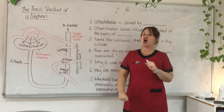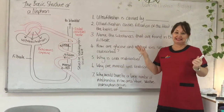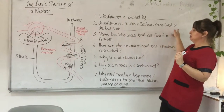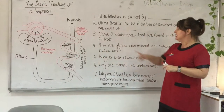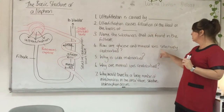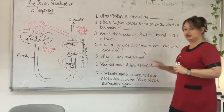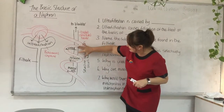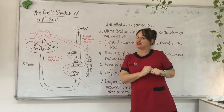Let's check our understanding with some questions. What causes ultrafiltration? What is the basis on which ultrafiltration filters the blood? What substances are found in the filtrate? How are glucose and mineral ions selectively reabsorbed? Why is urea reabsorbed? And why would there be a large number of mitochondria in the epithelial cells of the tubule? Join us in part two to find the answers.